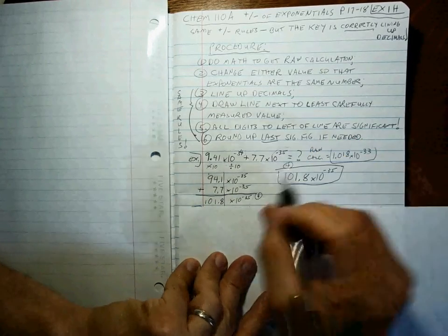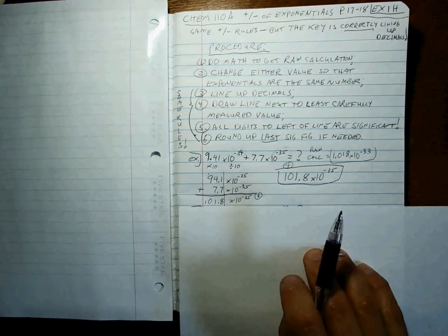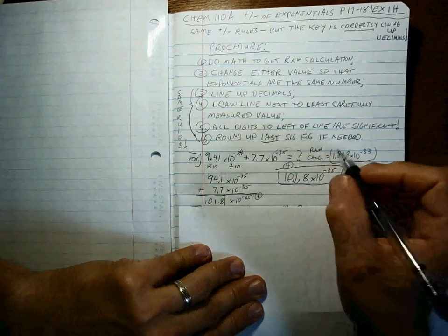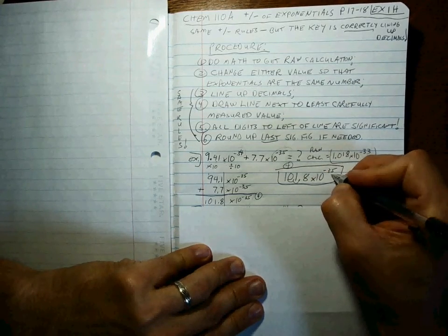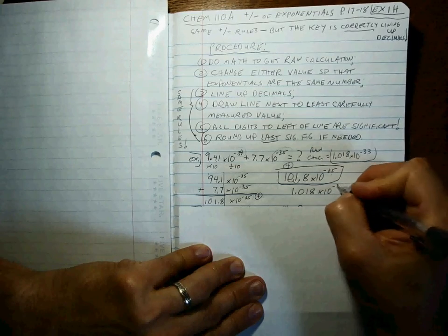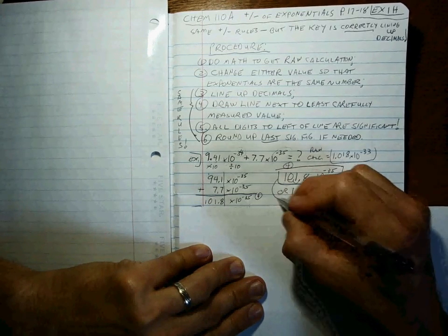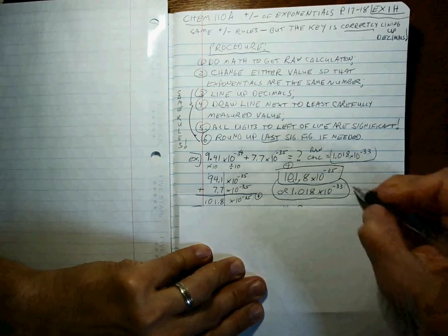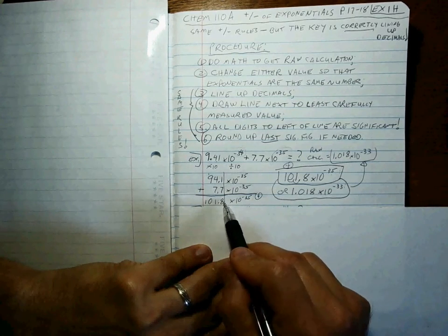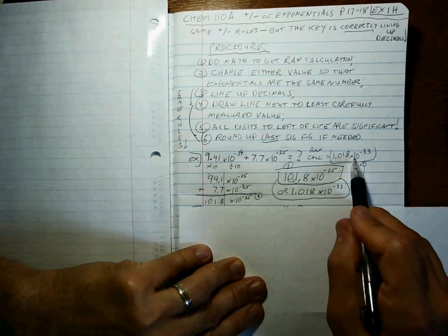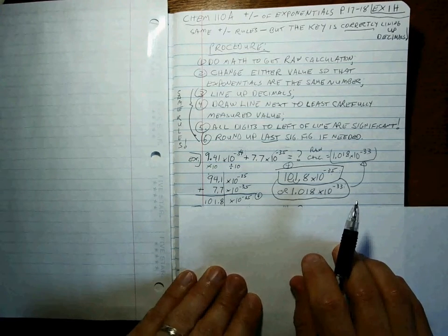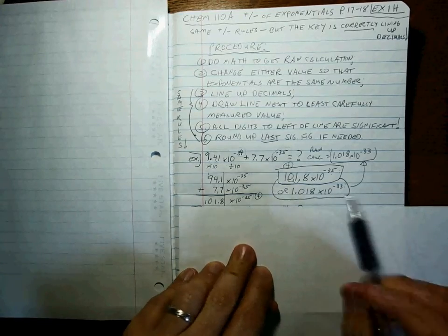With 4 sig figs, even though this had 3 and that had 2. You could also write this to standard exponential form if you wanted, making this number smaller by 2, so you make this number bigger by 2. And 1.018 times 10 to the minus 33 is exactly the same value with the same number sig figs, and it matches up here. If you do this part incorrectly, your problem result here won't match up with the raw calculator, and that's your best check to make sure you're doing the problem right.